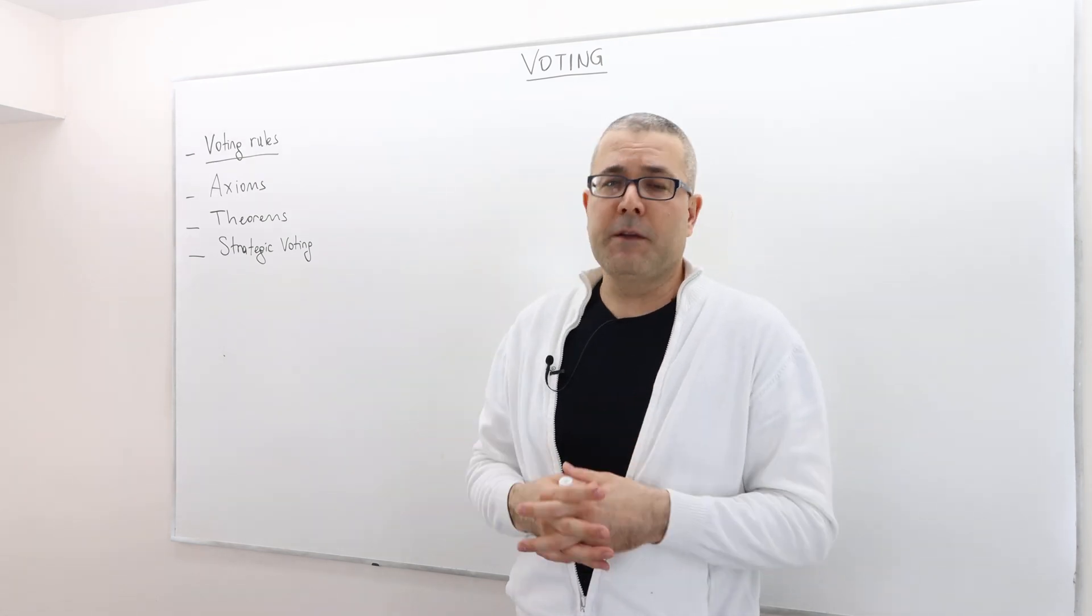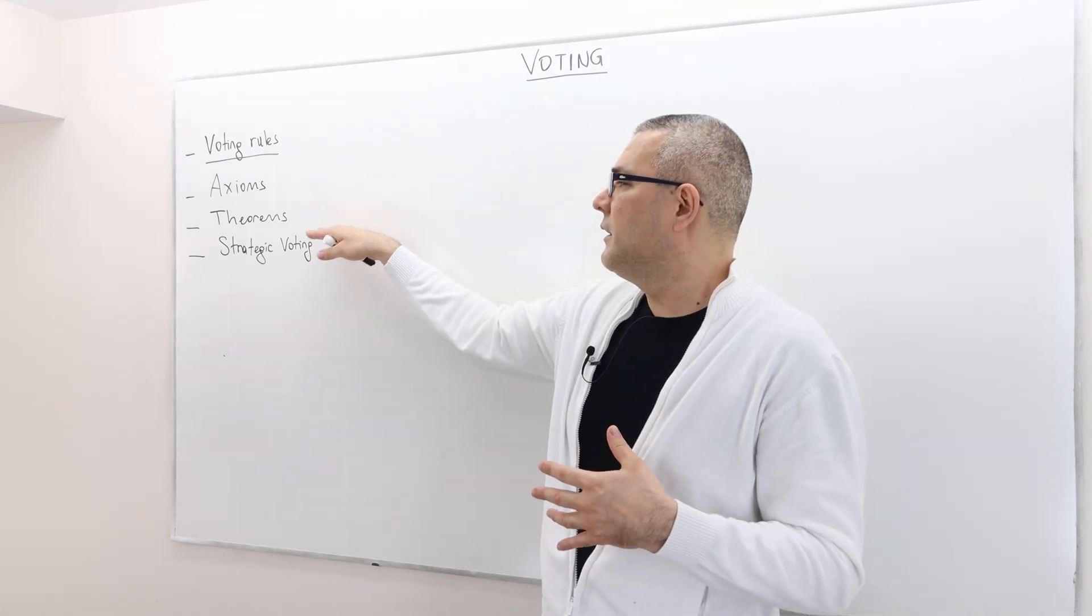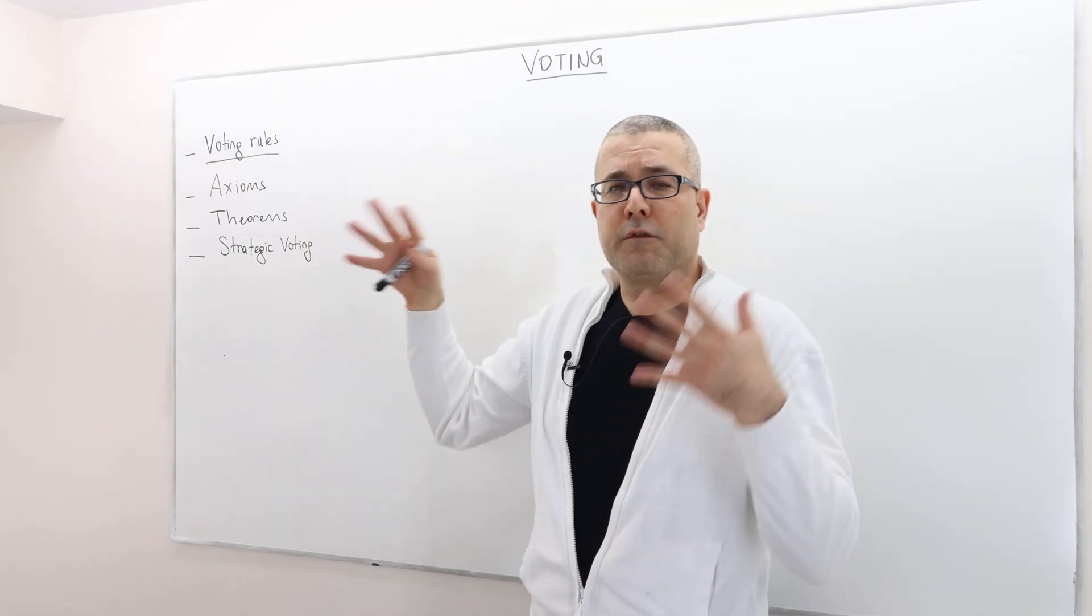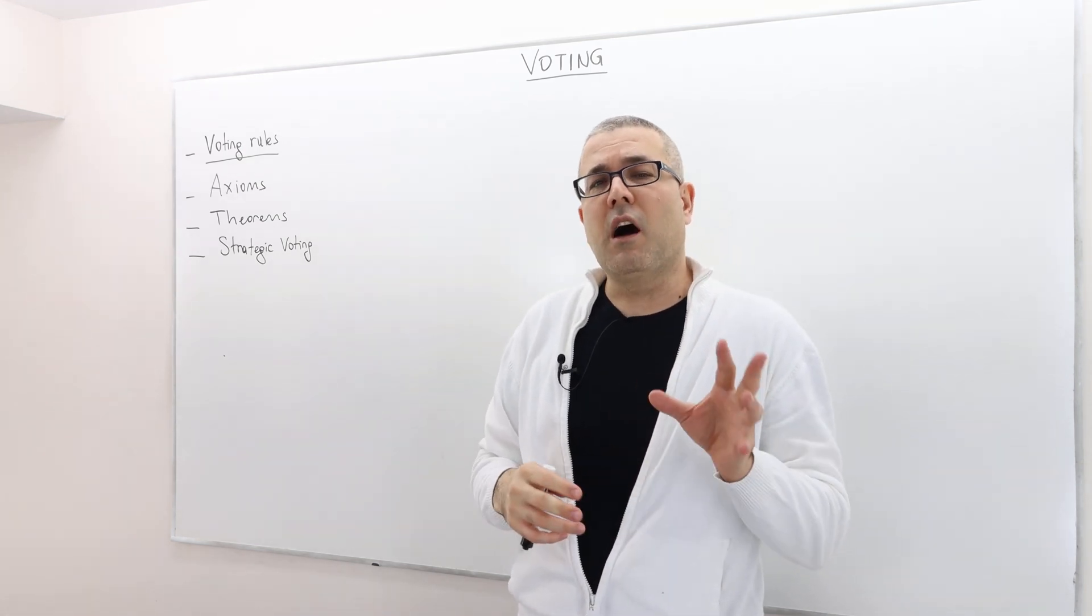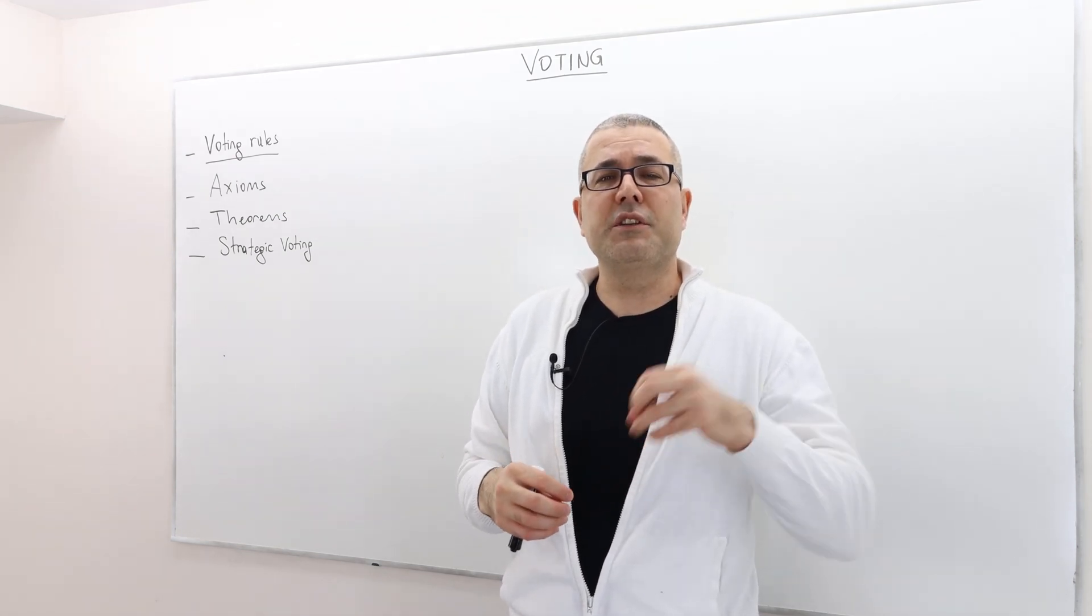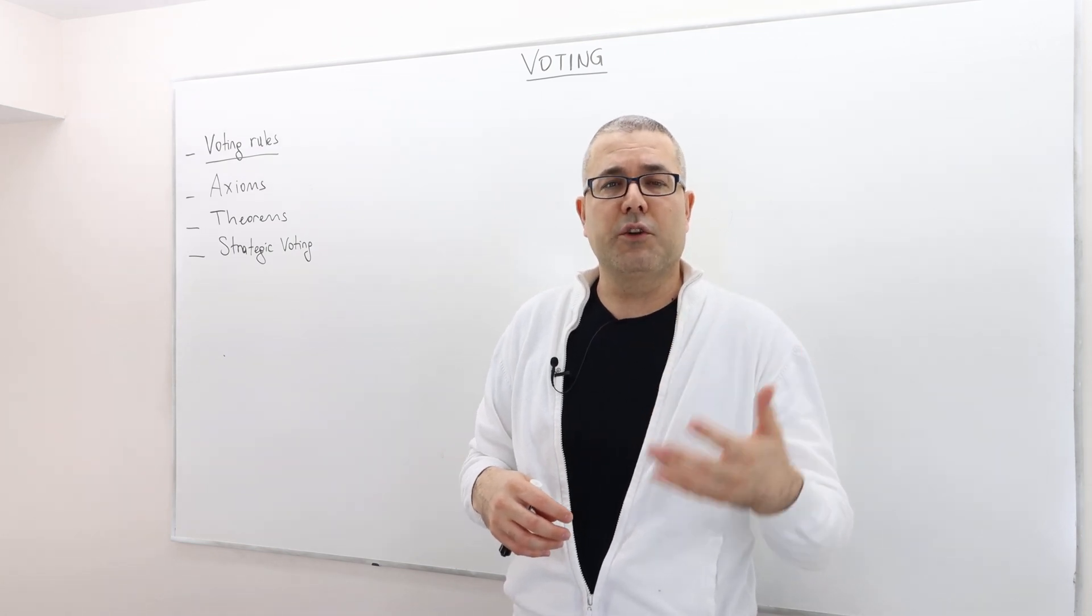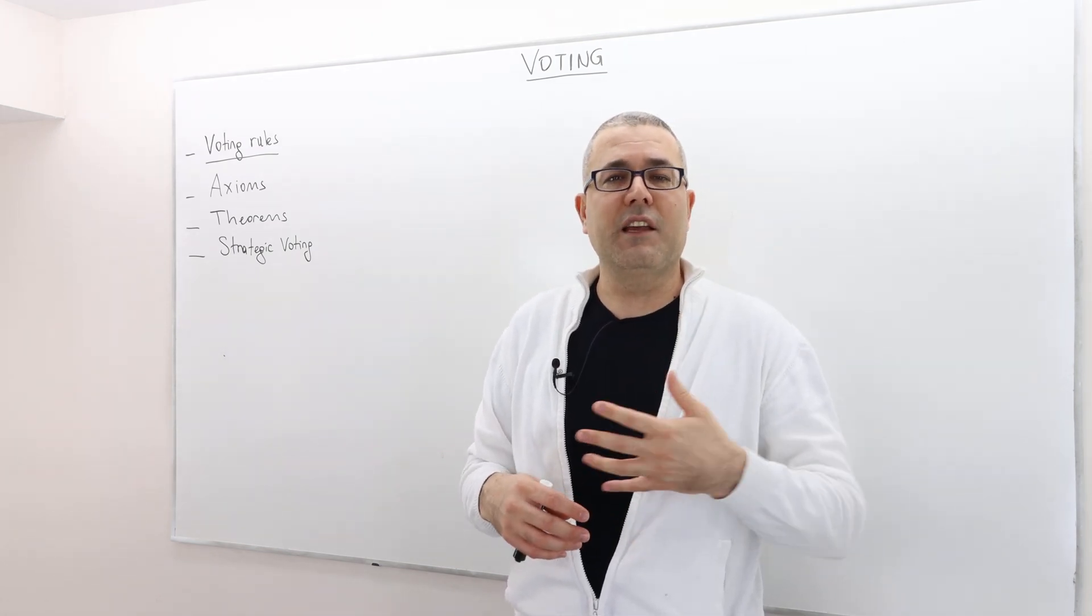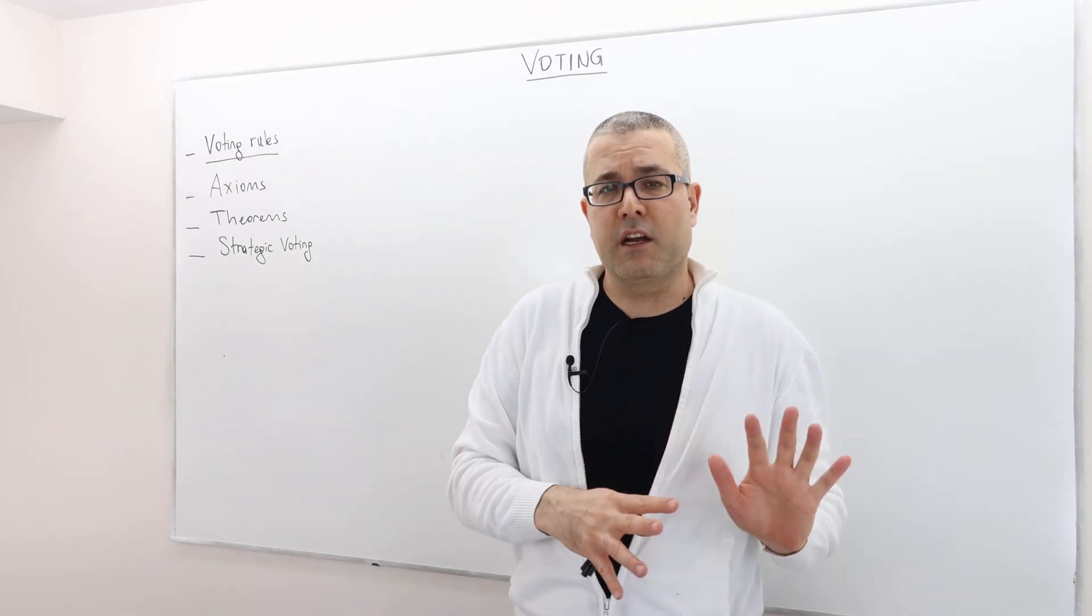Finally, I'm going to talk about strategic voting. Up until this point, in the first three main parts of this chapter, we assume that the voters do not strategically declare their preferences over the alternatives or candidates. They just declare it truthfully, so there's no strategic interaction.